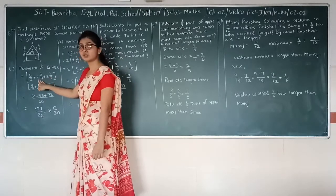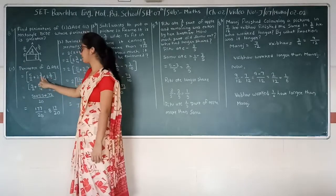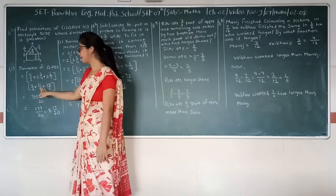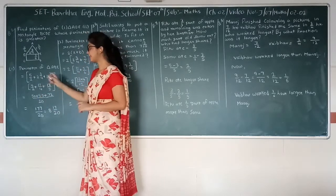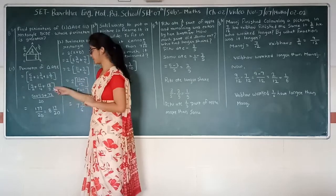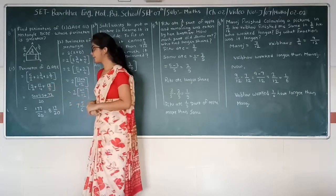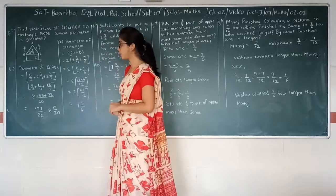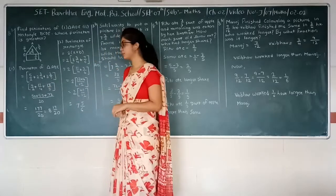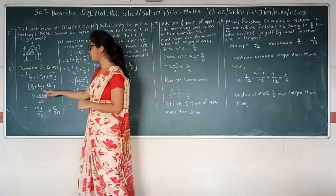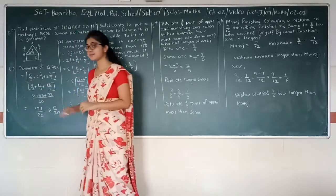For 2 times 4 is 8 and 8 plus 1, it will be 9, so we have 9 upon 4. Next one, 5 times 3 is 15, 15 plus 3 is 18, 18 upon 5. So we have 5 about 2 plus 11 upon 4 plus 18 upon 5.